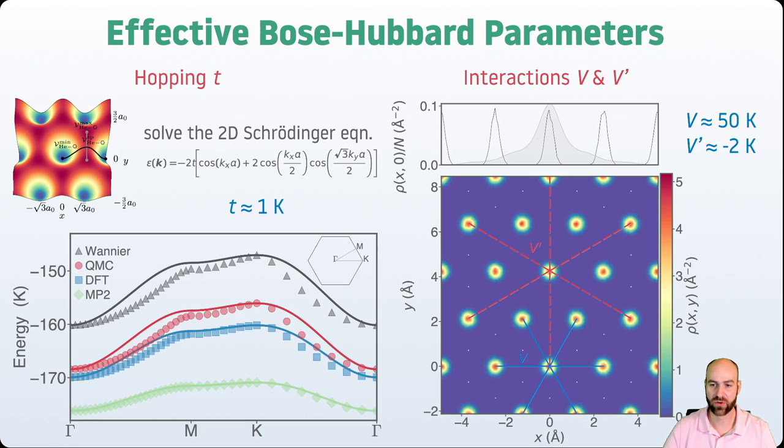The nearest neighbor interaction energy V or next nearest neighbor interaction V', and we find those to be about 50 Kelvin for V and about minus 2 Kelvin for V', the next nearest neighbor interaction. And the fact that the many-body methods are crucial to get this right can be seen in this top graph.